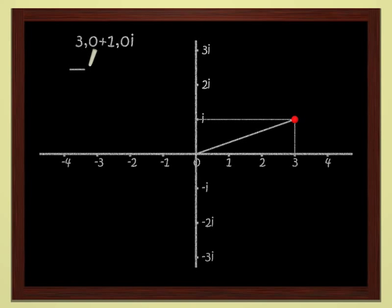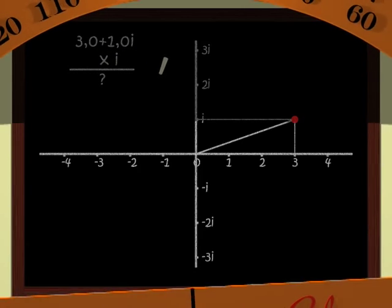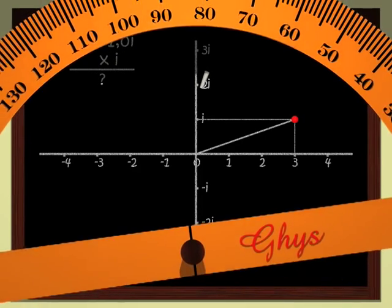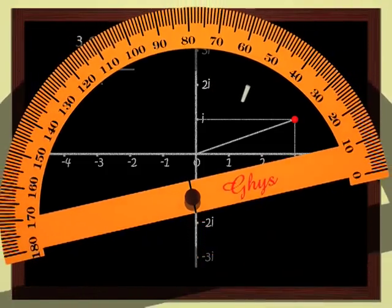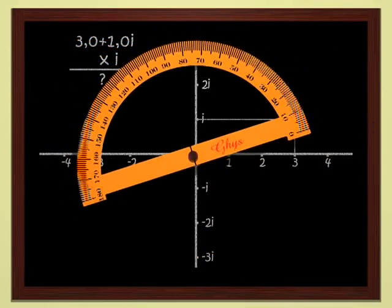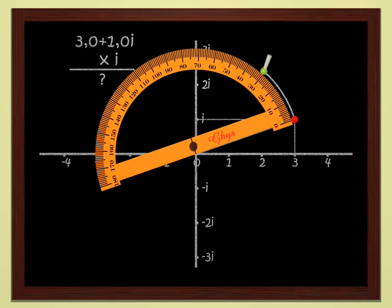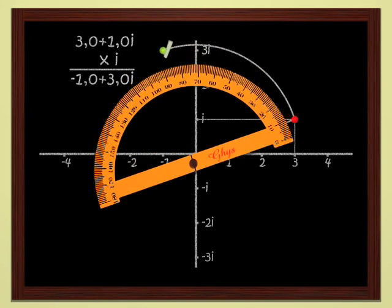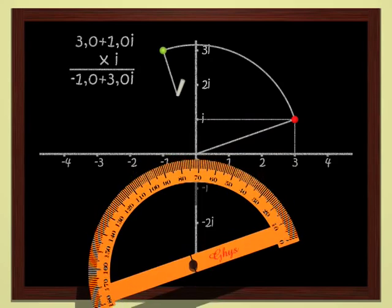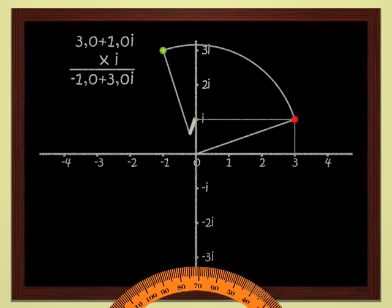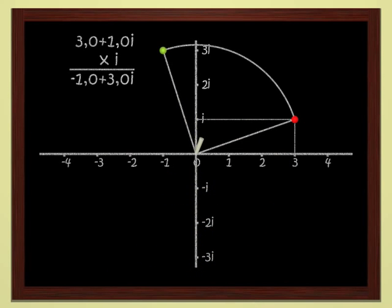Multiplying by i is not difficult either, since we know that i corresponds to a quarter turn. In order to multiply 3 plus i by i, we just have to rotate by a quarter turn. We get minus 1 plus 3i. Not so complicated, these complex numbers.